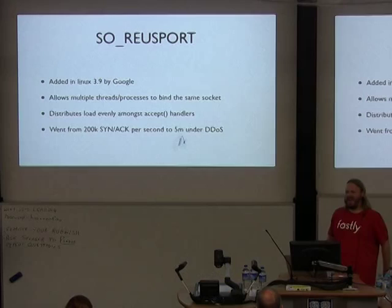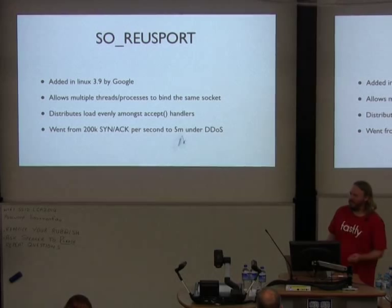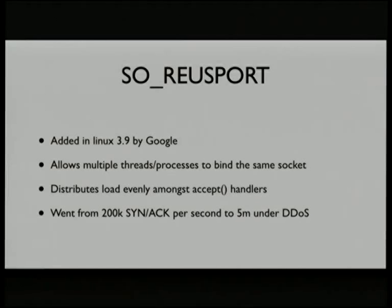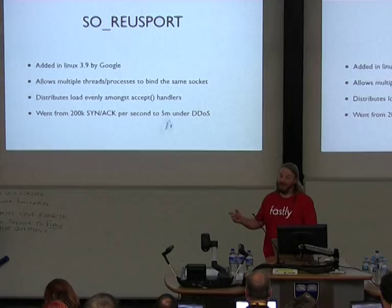We had a DDoS a while back that was unusually successful. We thought we could handle half a million per second per machine, but it was only 200,000. Two weeks later, a whole bunch of time with perf — we discovered a number of things. There were 14 lines of code that got us from 200,000 to 5 million a second. Our Apache tree has this patch — it's like a one-line patch to Apache — but it makes a huge, huge difference.